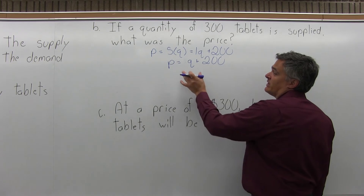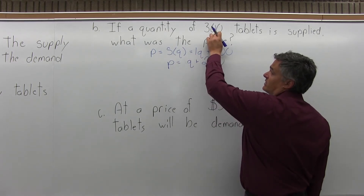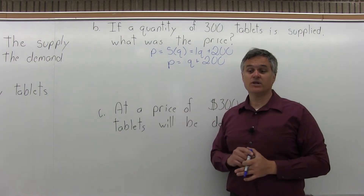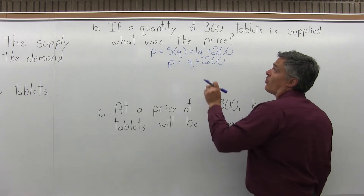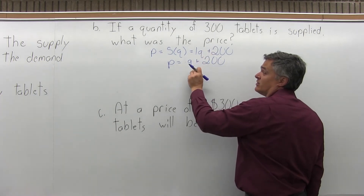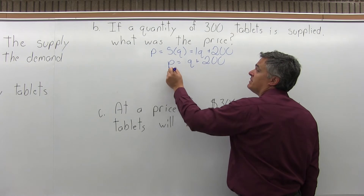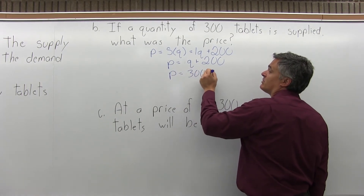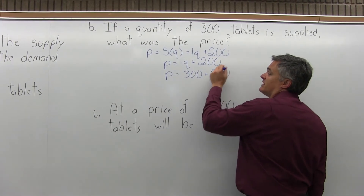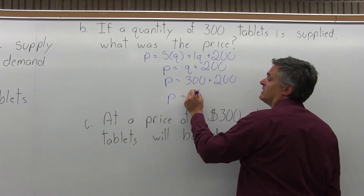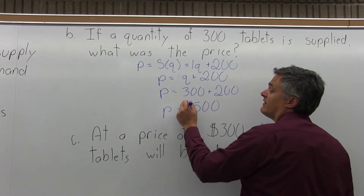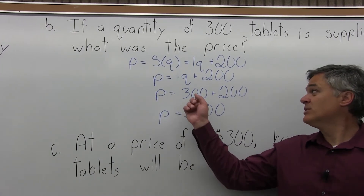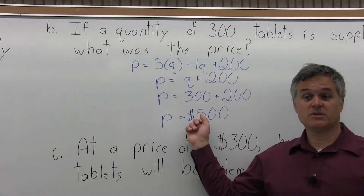The question says the quantity is 300, and Q is for quantity. So P equals Q plus 200 becomes 300 plus 200. That math is straightforward: 300 plus 200 is 500, so the price would be $500. If the company is willing to supply 300 computer tablets, the price per tablet must be $500.